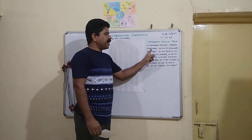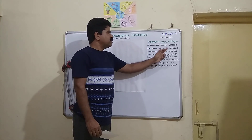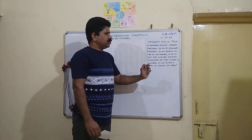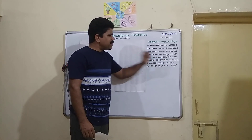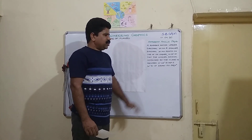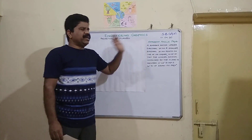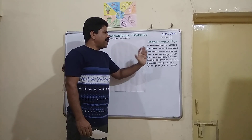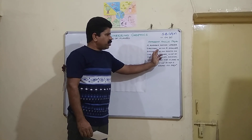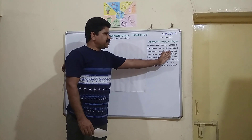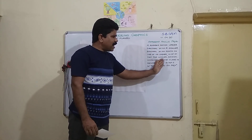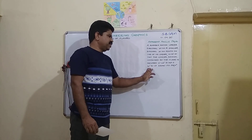A rhombus having longer diagonal 60 mm and smaller diagonal 30 mm rests on one of its corners in HP, so that the longer diagonal contained by the plane is inclined at 45 degrees to HP and 30 degrees to VP. Draw its projection. The geometrical shape is a rhombus with a longer diagonal of 60 mm and a shorter diagonal of 30 mm.